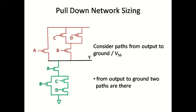To size the transistors, we start with the pull-down network. For pull-down network sizing, we consider paths from output to ground, also called the output to VSS line. From the output to ground, two paths are there.